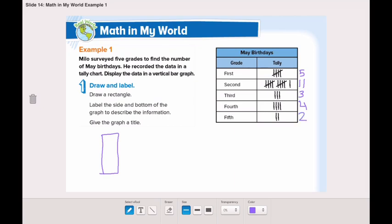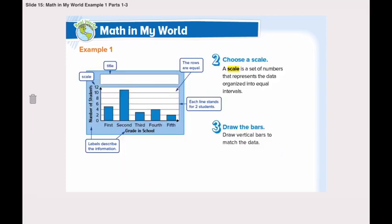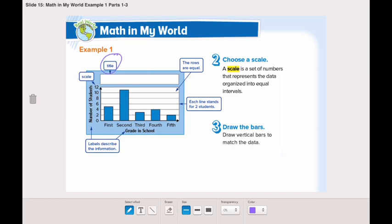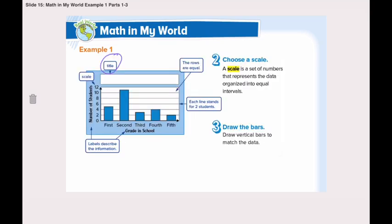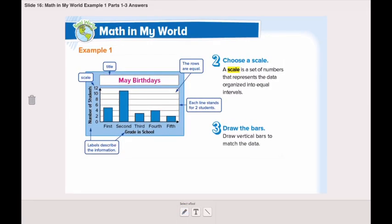Now we've known all the numbers on this tally chart. We need to draw a rectangle, label the sides and bottom of the graph to describe the information, and give the graph a title. Let's take a look at the graph. We need first a title. The title was May birthdays, so now let's write the title.